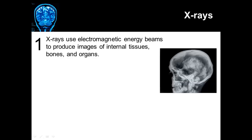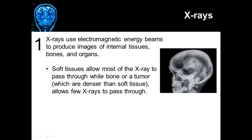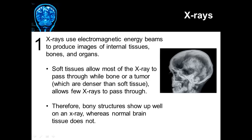The first way to look at the brain is x-rays. X-rays use electromagnetic energy beams to produce images of internal tissues, bones, and organs. Soft tissue allows most of the x-rays to pass through, while bone or a very dense tumor allows few x-rays to pass through. Because of those differences, an image can be obtained that shows those very dense structures. Therefore, bony structures show up well on an x-ray, whereas normal brain tissue does not, because it is a very soft tissue.